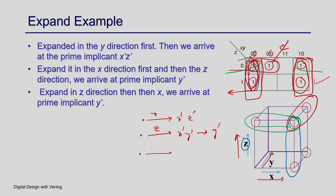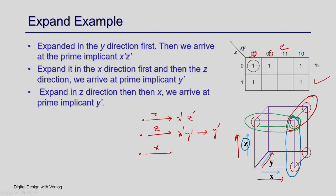Starting from a particular point, if you expand in y direction you end up getting z-bar·x-bar. If you start with z direction you get x-bar·y-bar, and then you can expand in x direction to get y-bar. So it does not matter whether you go from z to x or x to z — you end up getting the same thing. But one important point is that if you expand through y direction, you end up getting a smaller prime implicant. Since this is a random process, you cannot guarantee which prime implicant you will obtain after the expand step starting from an implicant point.